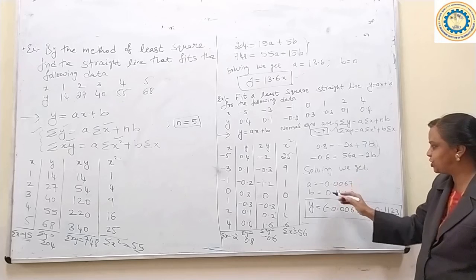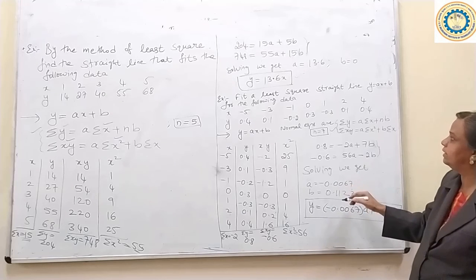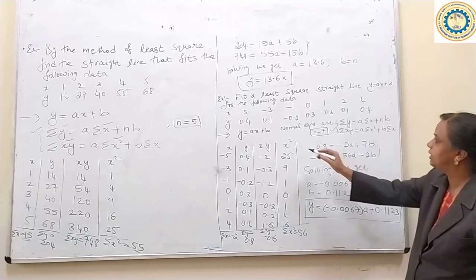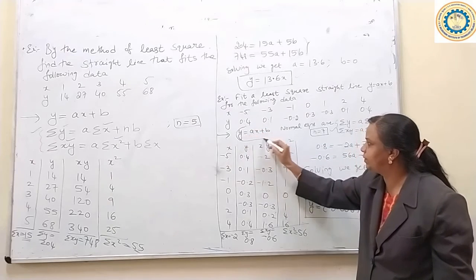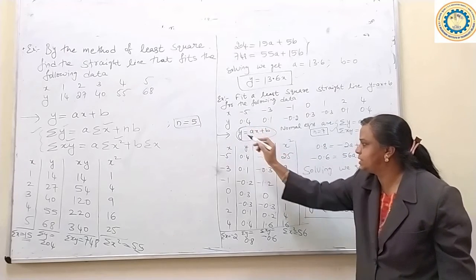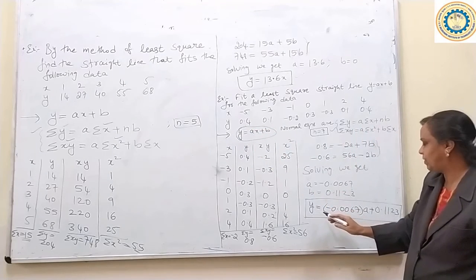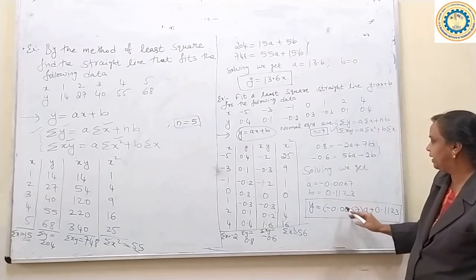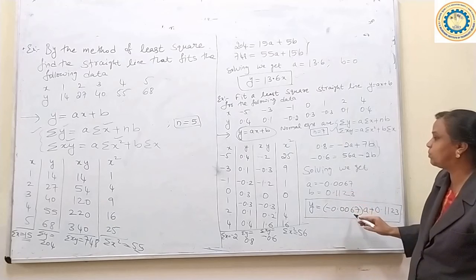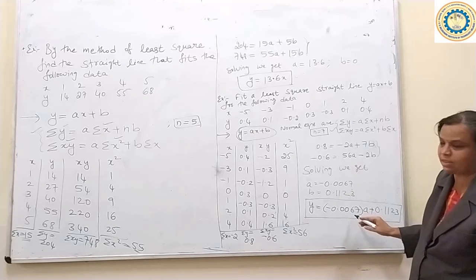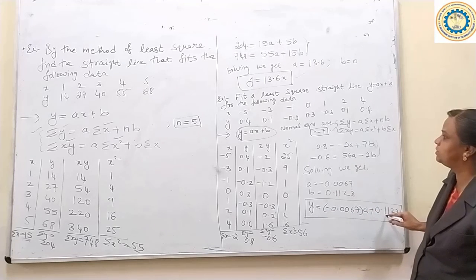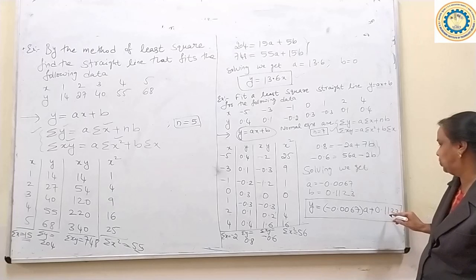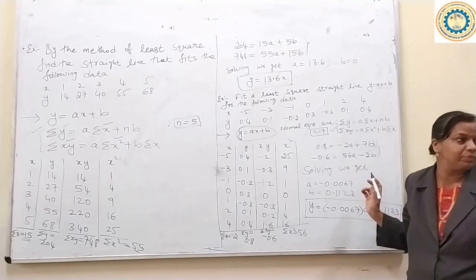Substitute A and B values in the equation form Y equal to AX plus B. So, Y equal to minus 0.0067X plus 0.112. Thank you.